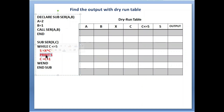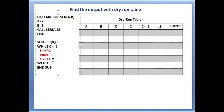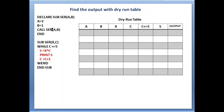After the condition, we have variable s, so I have written that here. Then there is a print statement — whenever you see 'print' in QBasic, that is for output; it will display the data on the output screen. So for print we write 'output' in our table. Then c equals to c plus 1 — c is already written, so no need to write it twice. Now we can start the dry run.